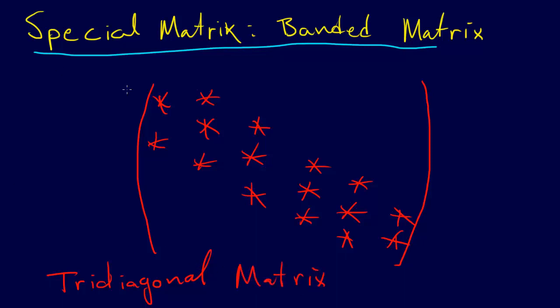You should be able to see why, because if you were to measure the width of the diagonal here, that's going to be three tall. And so, three is tri, and so this is a tridiagonal matrix.